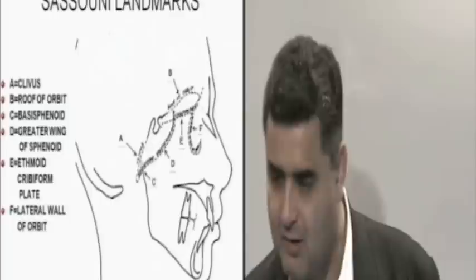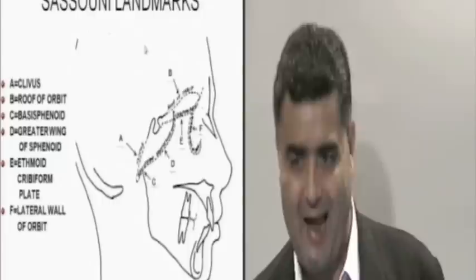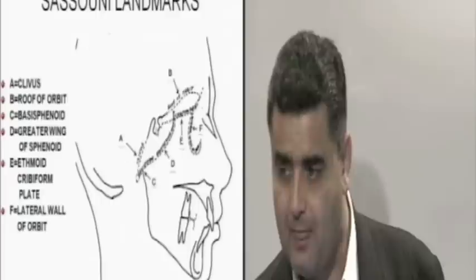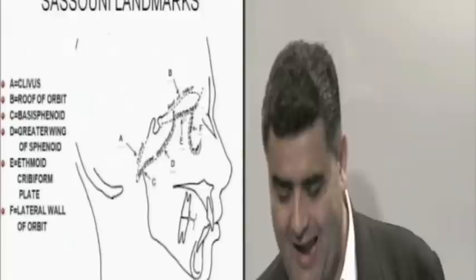Ricketts used to talk about an angle called the saddle angle. Saddle angle is the angle between the anterior cranial base and the posterior cranial base. Anterior cranial base is normally from nasion to sella. Posterior cranial base is from this point, which is called basion, to sella. That angle from the posterior cranial base to the anterior cranial base is sometimes known as the facial angle or the saddle angle.